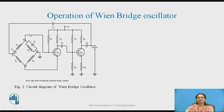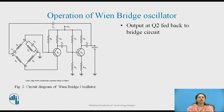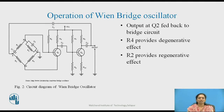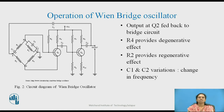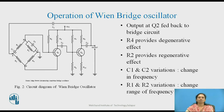So Vf is given to transistor Q1 and V0 is given to the bridge circuit. The output of Q2 is fed back to the bridge circuit. R4 provides the degenerative effect and R2 provides the regenerative effect, which is in parallel combination with C2. Variations in C1 and C2 will change the value of frequency, while variations in R1 and R2 will decide the range of frequency.